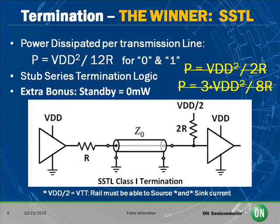The next termination method is SSTL — stub series termination logic. The power dissipated is VDD squared over 12R, for both a 0 and a 1, for each transmission line. This is much less power than the other two termination methods. But since this rail is one half of VDD, it must be capable of sourcing and sinking current.